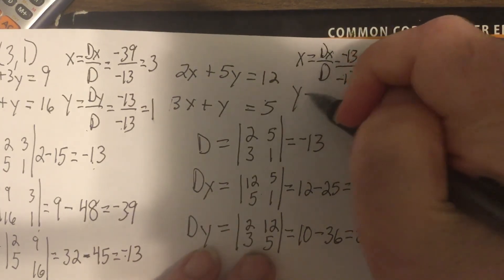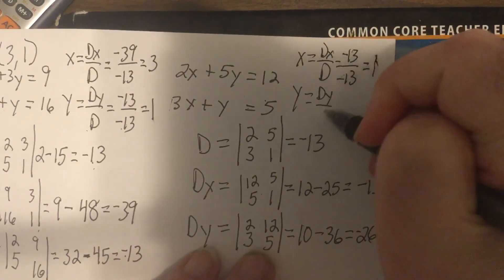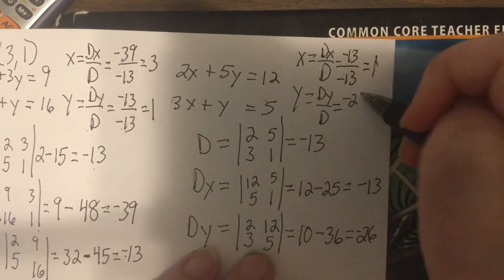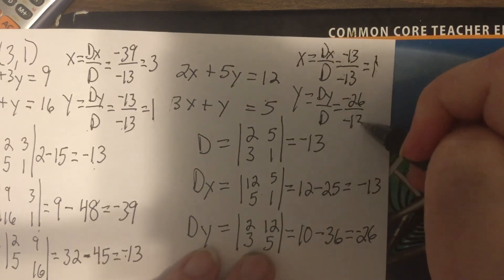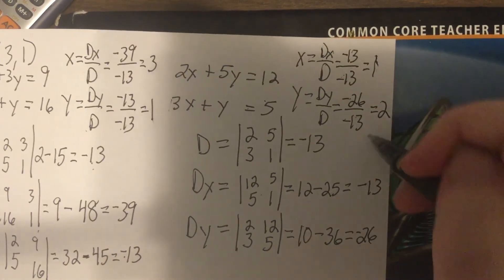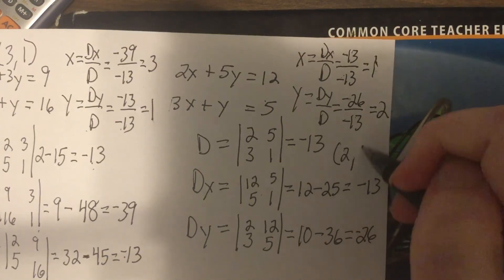And Y is DY divided by D, which is negative 26 divided by negative 13, which is 2. So the answer is 1, 2.